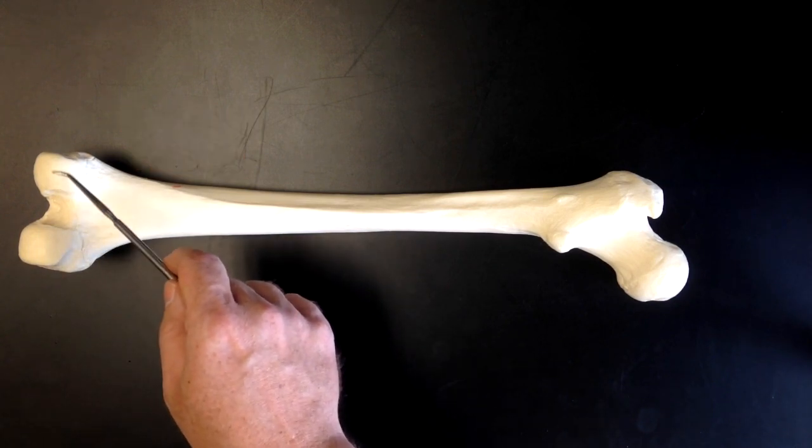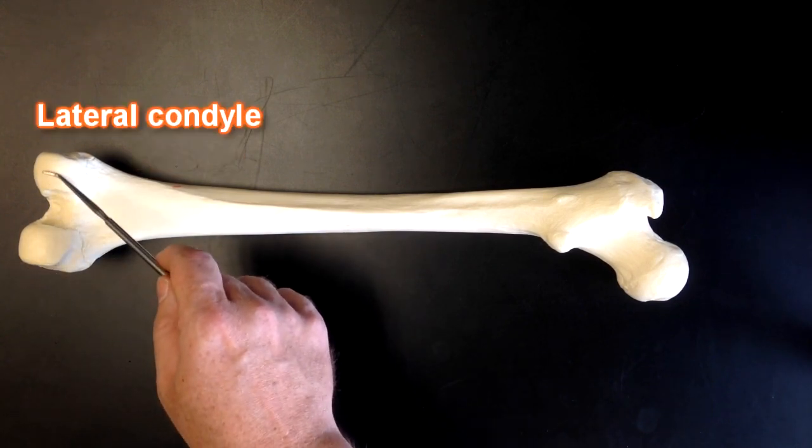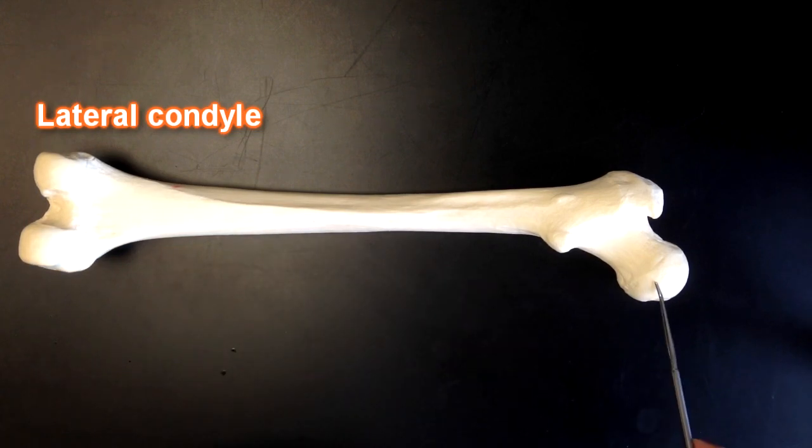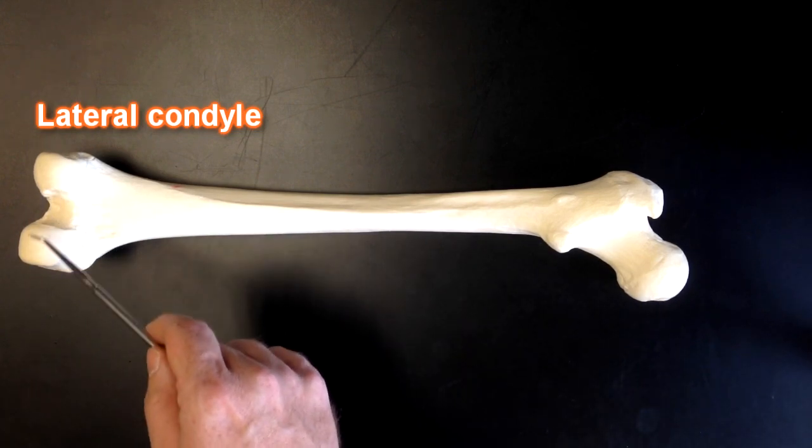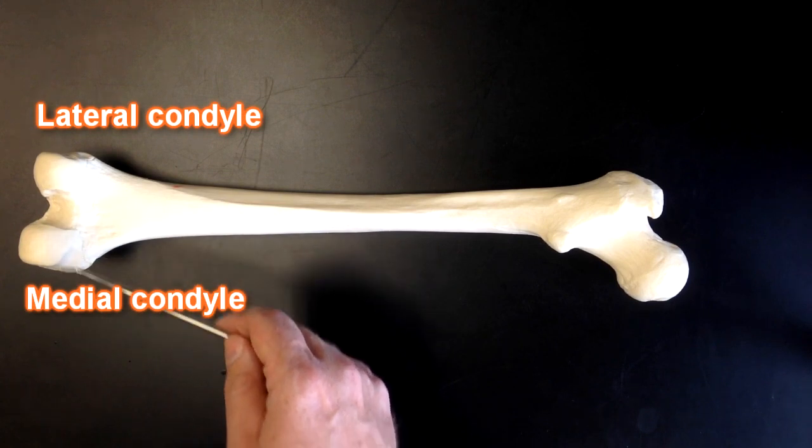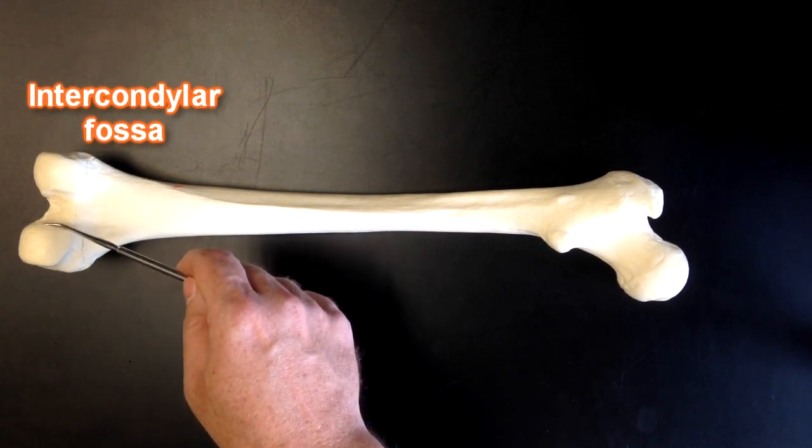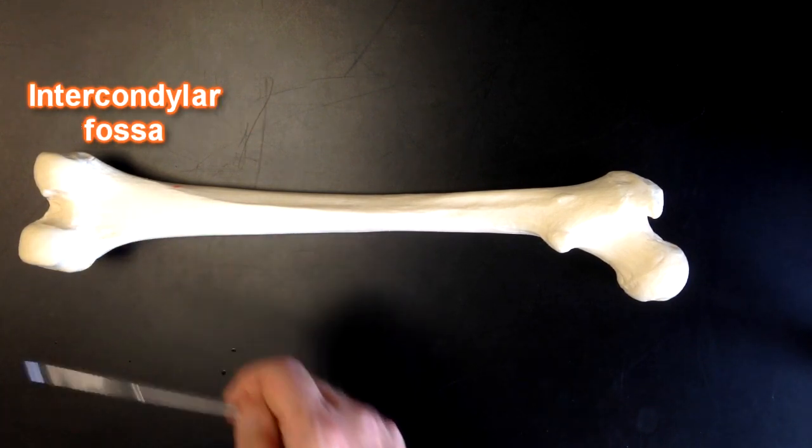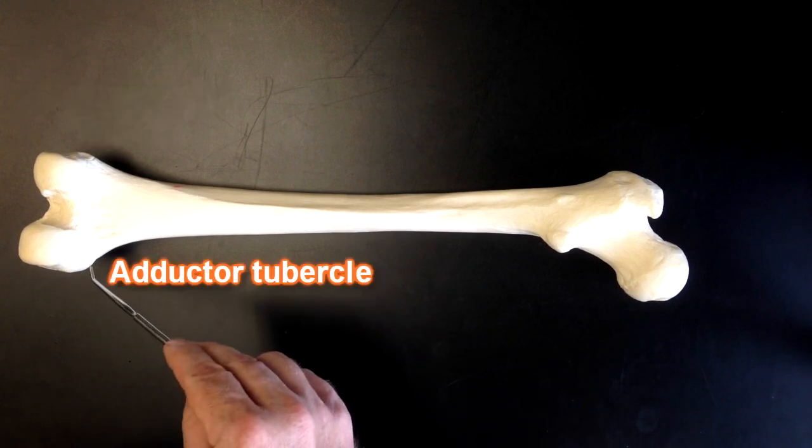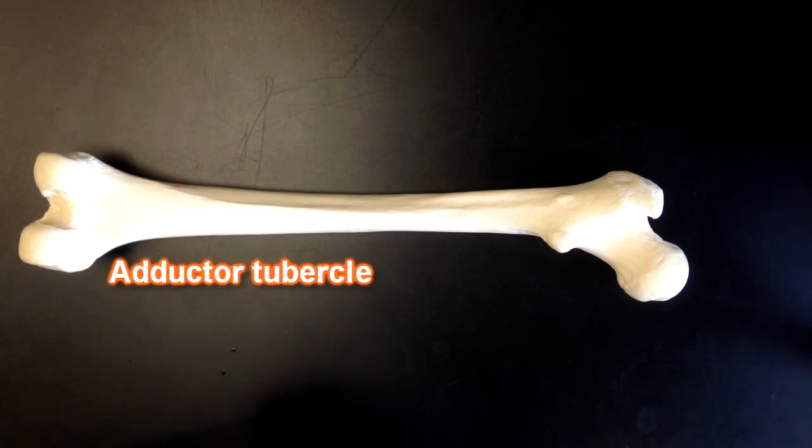Here we can see the condyles. This would be the lateral condyle, looking at my landmarks up here, lateral condyle and medial condyle. And then there's this intercondylar fossa located right here. Here we can see adductor tubercle on the medial as well.